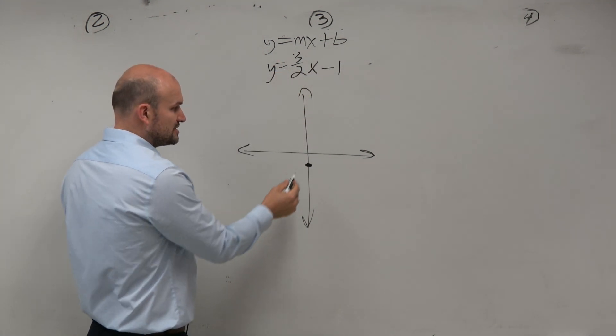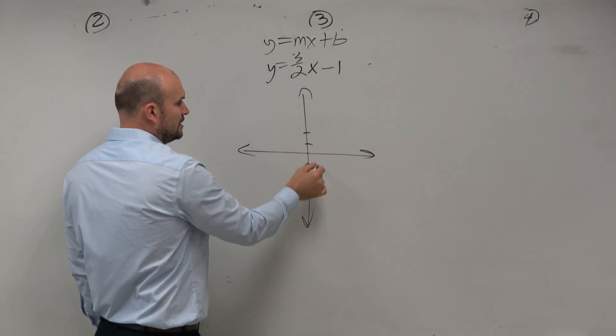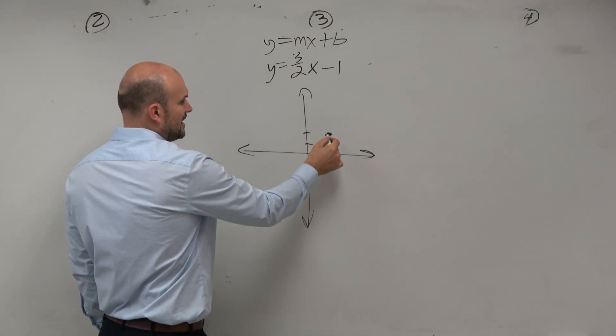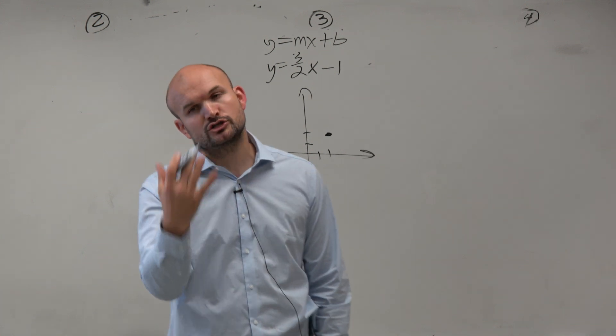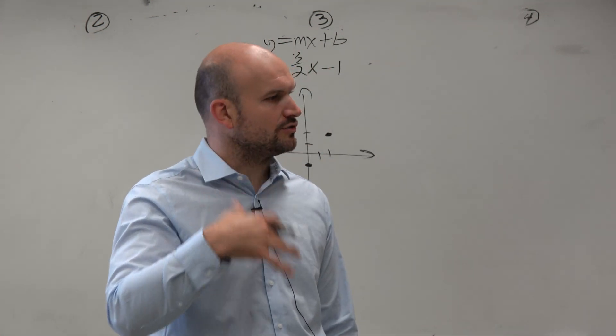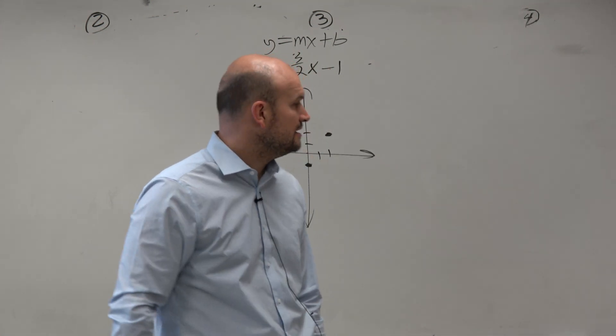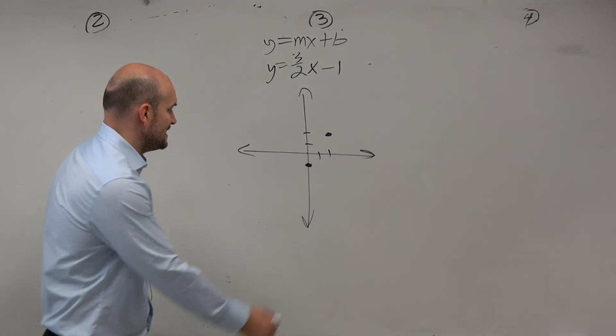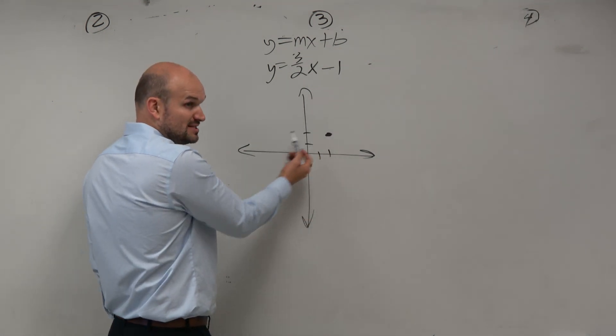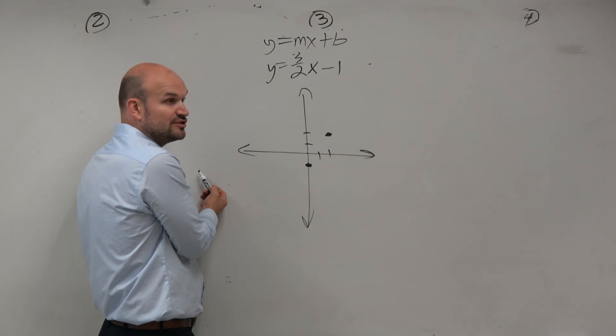And then 3 halves represents your slope, which is going to tell you up 3 to the right 2. Because your slope is your rise over your run, or your change in your height over your change in your run, or your horizontal distance. Now it's important for you guys to recognize that if you go up and over, that's two points. That's a minimum amount of points that you need to graph a line.